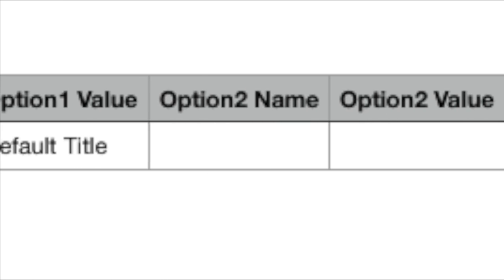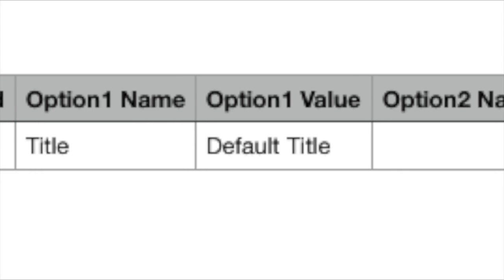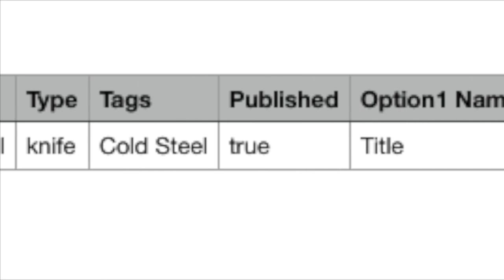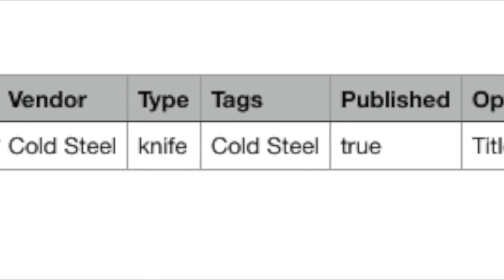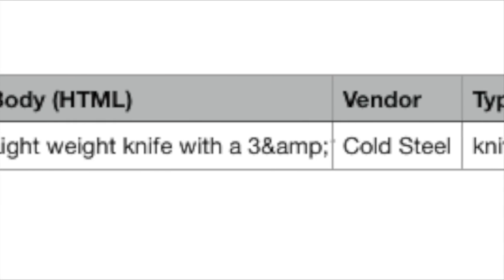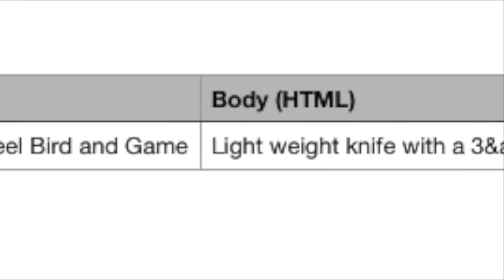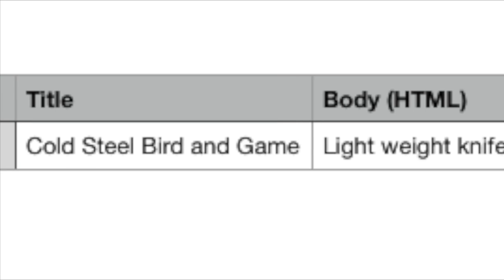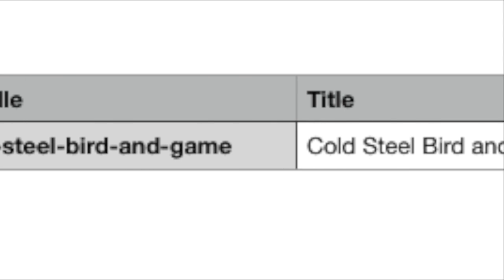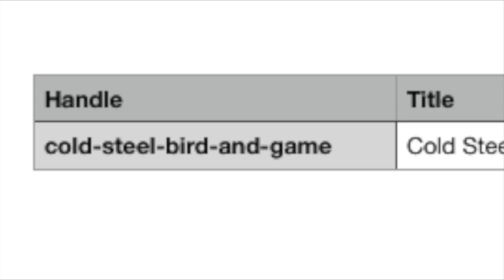Almost every program that imports a CSV file knows what a data map is and where to begin. The first row in a data map tells the importing system where to store the incoming values. The data map tells the system importing the file that the elements in those columns should be deposited into specific fields.